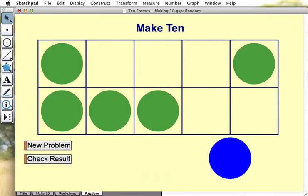A separate page of the sketch starts by showing students a random number of green counters in the frame. Their challenge is to be able to determine as quickly as possible how many green counters there are and how many blue counters need to be added to make 10.